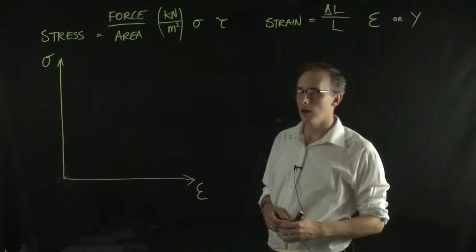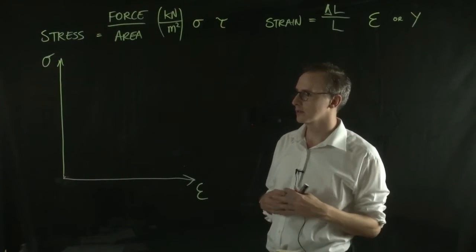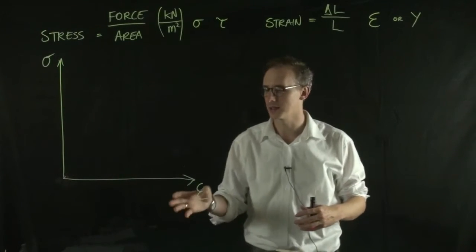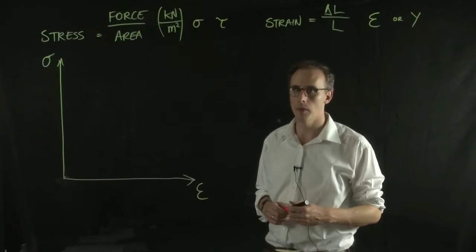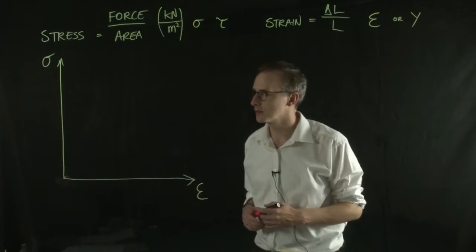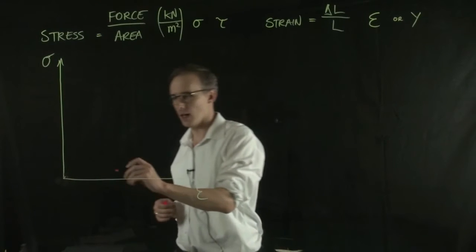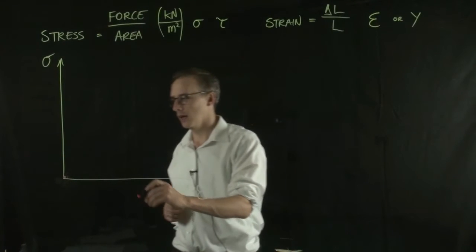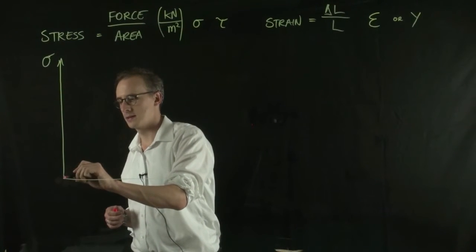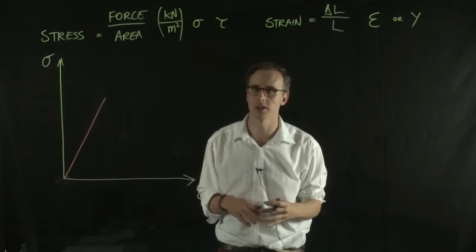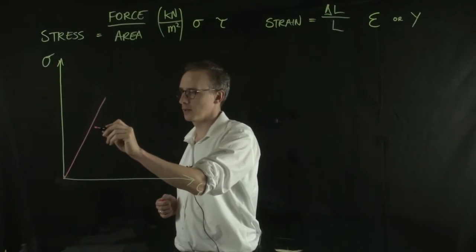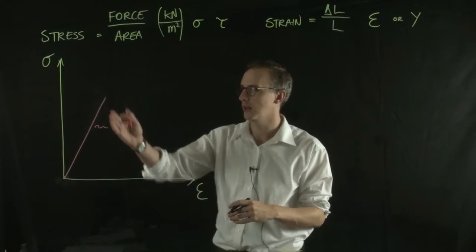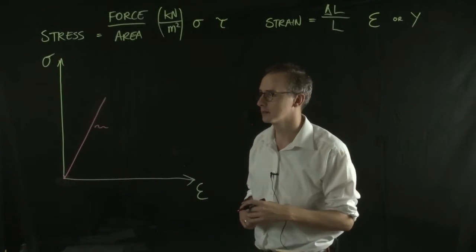A stress-strain diagram is plotted with stress on the y-axis and strain on the x-axis. Before subjecting a material to any stress, it's at zero stress and zero strain. When we subject it to stress, it follows a relationship governed by Young's modulus of elasticity. This straight line part of the graph is elastic deformation.